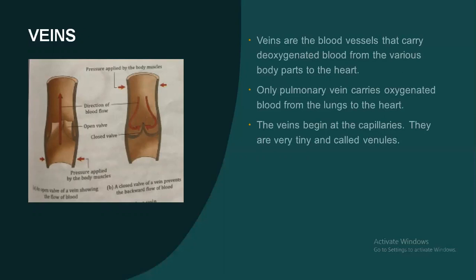In arteries, they have a three-layered thick muscular wall, but in veins the walls are thin, less elastic, and less muscular. In arteries, they have a narrow lumen in which blood flows with high speed and under high pressure, but in veins they have a wide lumen in which blood flows with low speed and low pressure. Arteries do not have any valve, but veins have valves which control the unidirectional flow of blood.